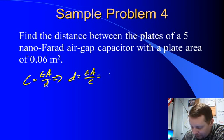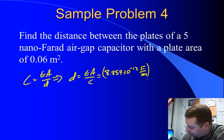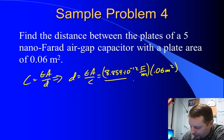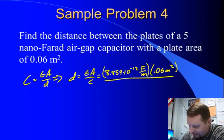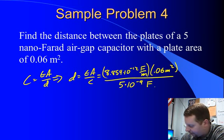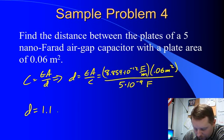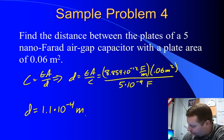That's going to be 8.854 times 10 to the minus 12. And this time, let's write it as farads per meter, equivalent units, times our area, 0.06 square meters, divided by our capacitance. In this case, 5 nanofarads, or 5 times 10 to the minus 9 farads. Use my calculator. So here, d comes out to be 1.1 times 10 to the minus 4 meters.